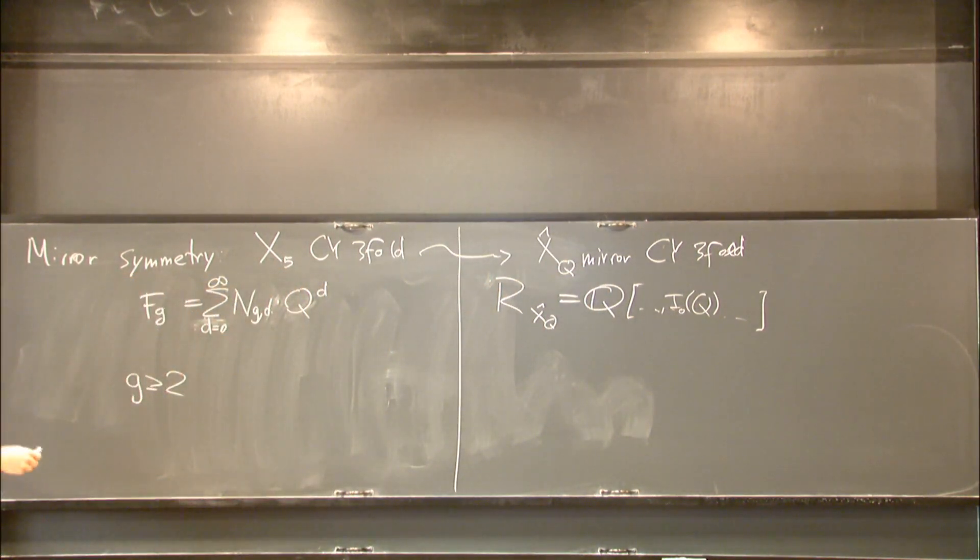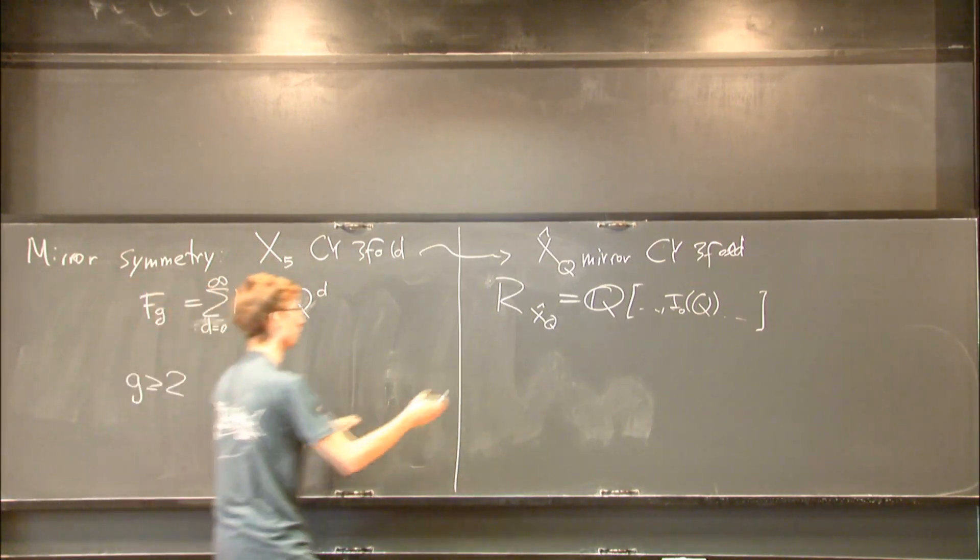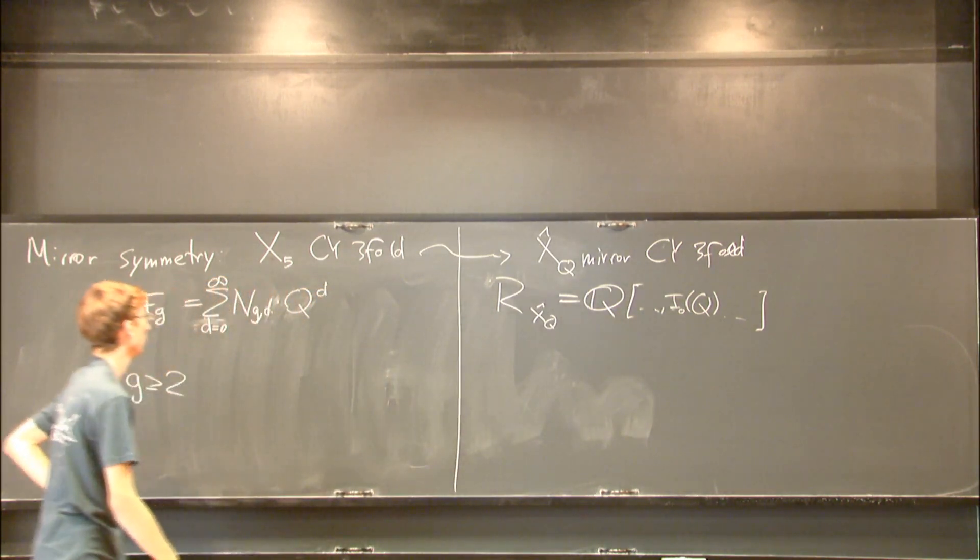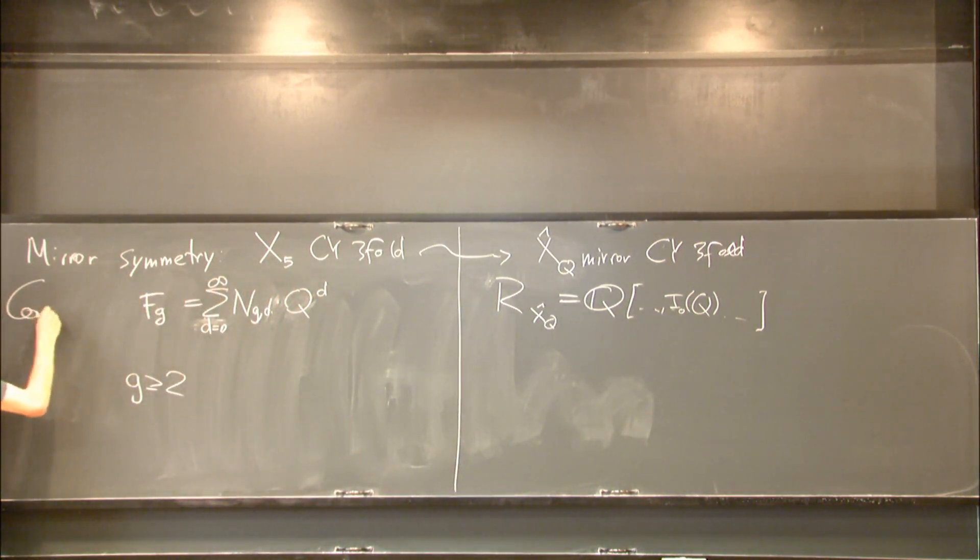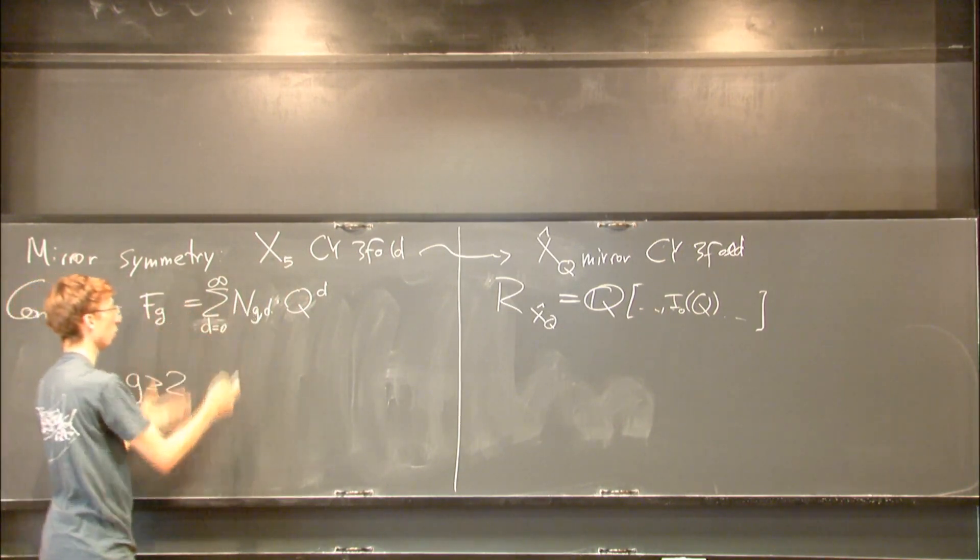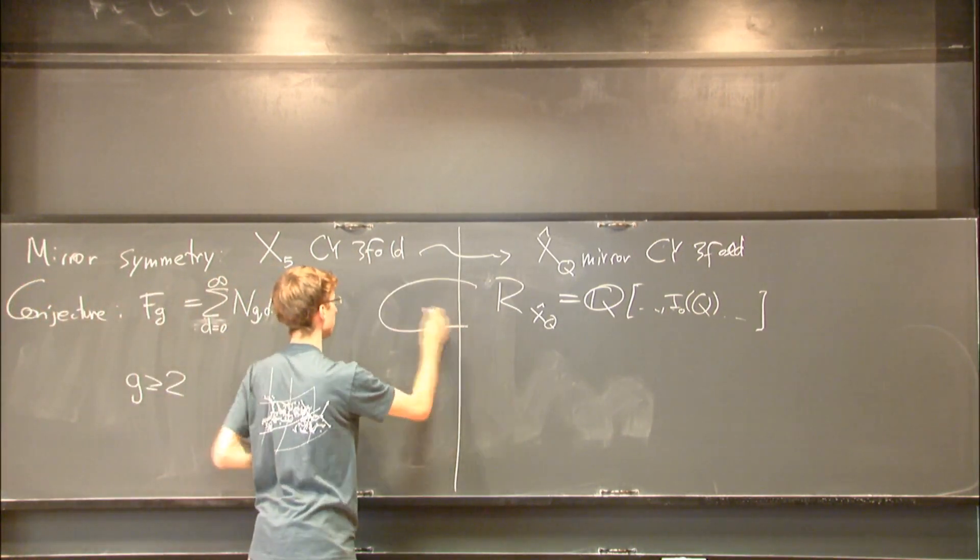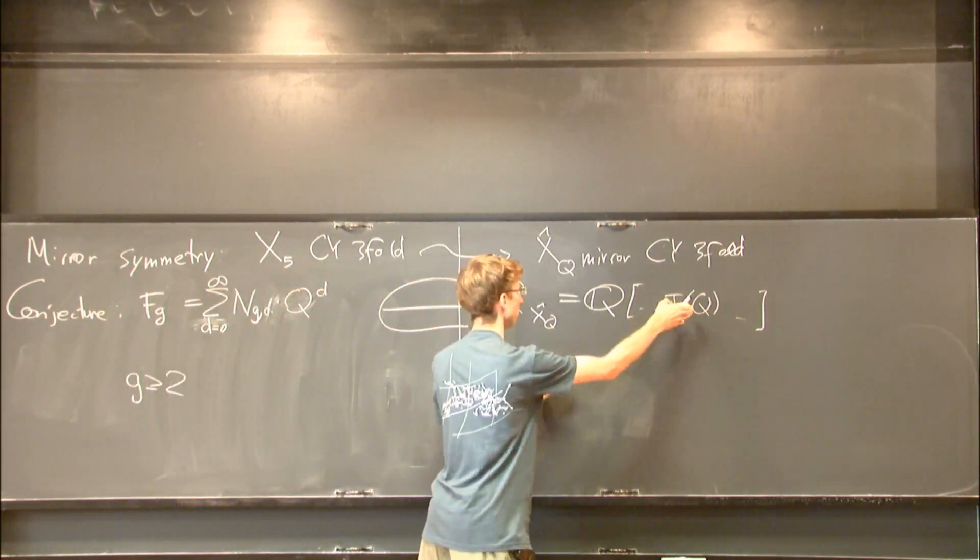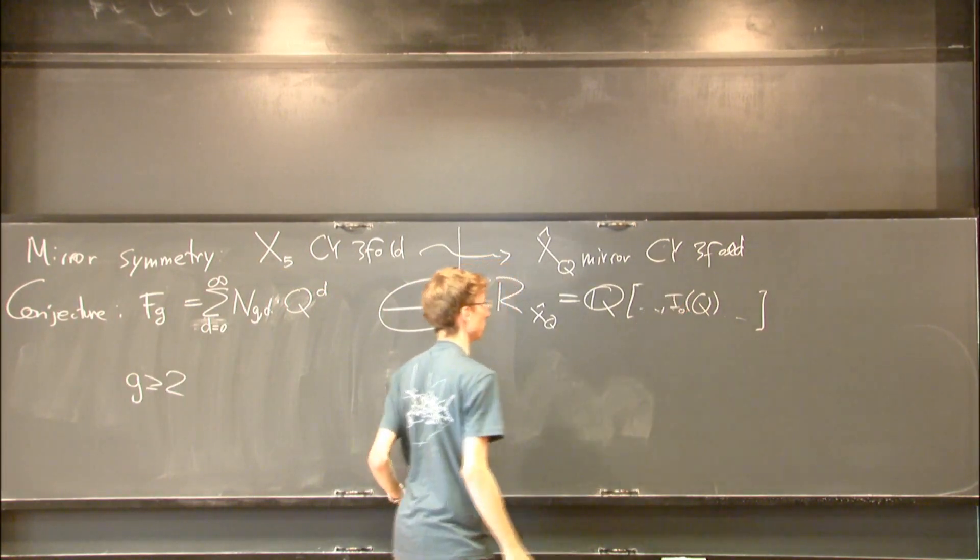There's several of them - you can make it explicit. This is a concrete object. These are power series in Q. You can write all of them down. Then the conjecture says that this collection of Gromov-Witten invariants isn't an arbitrary power series in Q, but it can be written in terms of these integrals, in terms of these concrete functions.